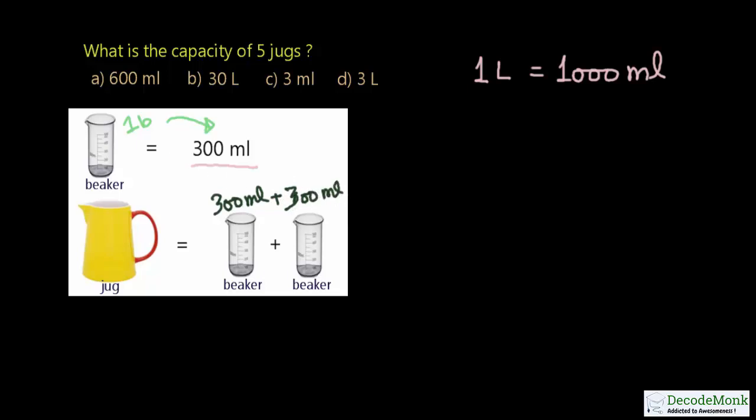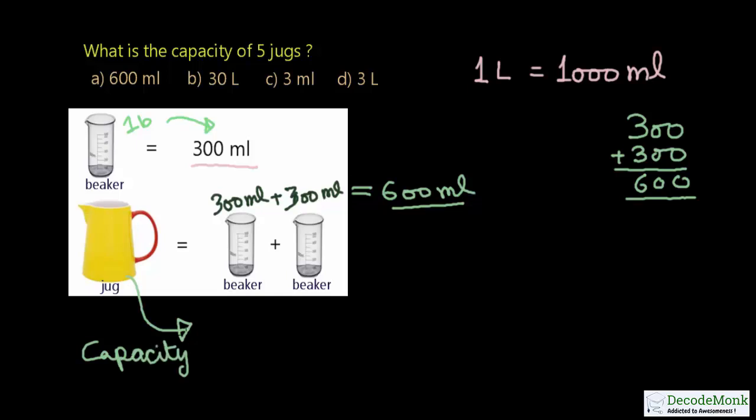You should understand that each beaker is 300 milliliters. The total of these 2 beakers equals 300 plus 300, which you should be able to calculate quickly. This equals 600 milliliters. From this calculation, the capacity of the given jug is 600 milliliters.